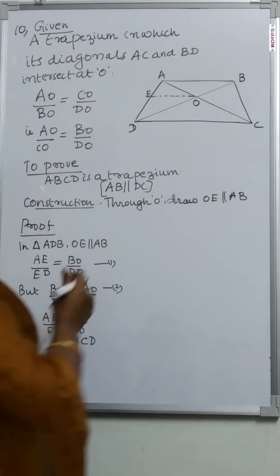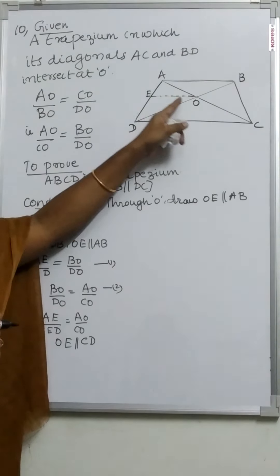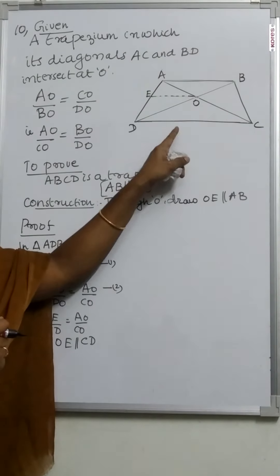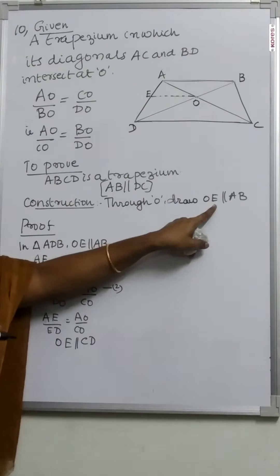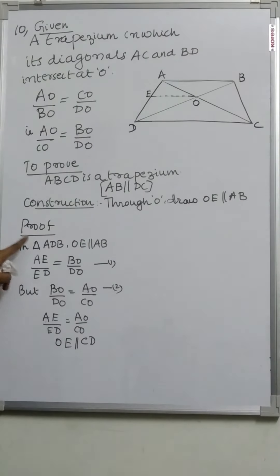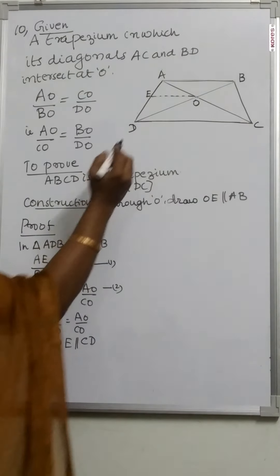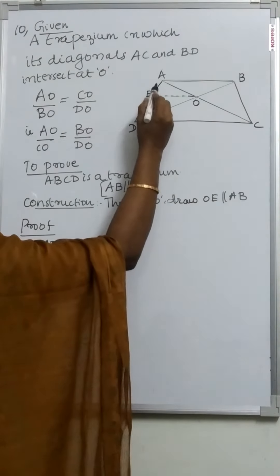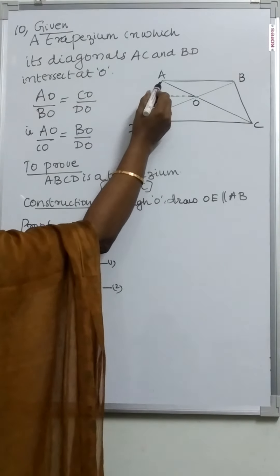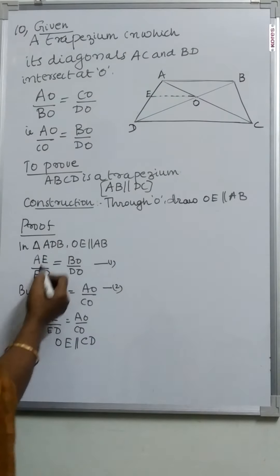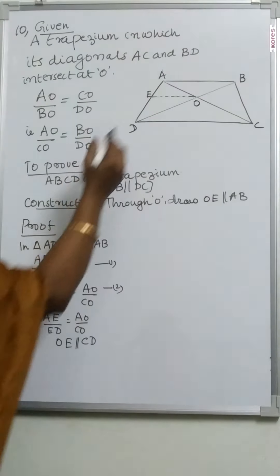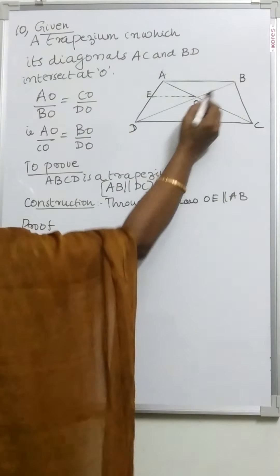When OE is parallel to AB, we need to prove OE is also parallel to CD. Proof: in triangle ADB, OE is parallel to AB. Therefore, AE by ED is equal to BO by DO by the Basic Proportionality Theorem. That is equation 1.